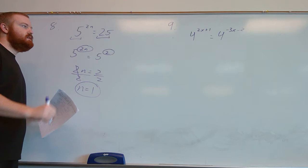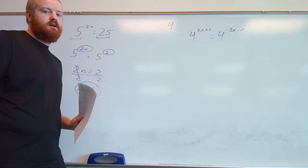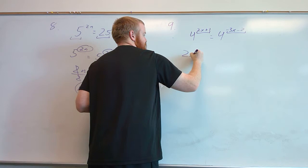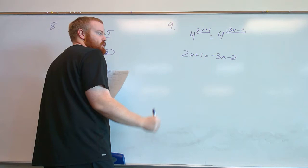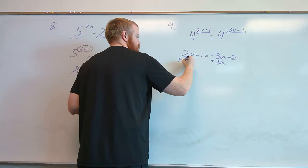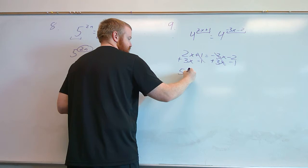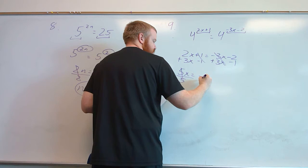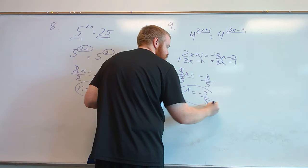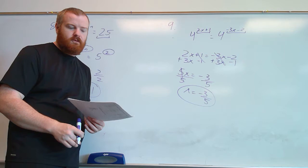For example 9, the bases are already the same — both are 4 — so we just set the exponents equal to each other: 2x plus 1 equals negative 3x minus 2. Adding 3x to both sides and subtracting 1 gives us 5x equals negative 3. Dividing by 5, we get x equals negative 3 over 5, which does not simplify further, so that is our answer.